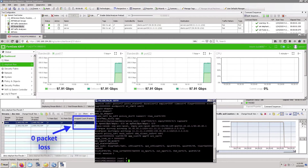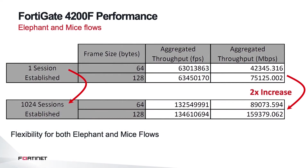That concludes the demo for today. To explain a little bit more about the flexibility of the MP7 ASIC: with a single session established at lower frame sizes of 64 bytes or 128 bytes, you're able to reach up to speeds of 75 gigs of aggregated throughput. In the case of small-byte packets, which are typically very difficult to handle, these are usually not considered elephant flows because of the small packet sizes. In general, elephant flows have much larger packet sizes. But what we want to highlight here is that whether one session or lots of mice flows — in this case for small packets — we can see a huge increase in performance with lots of mice flows.